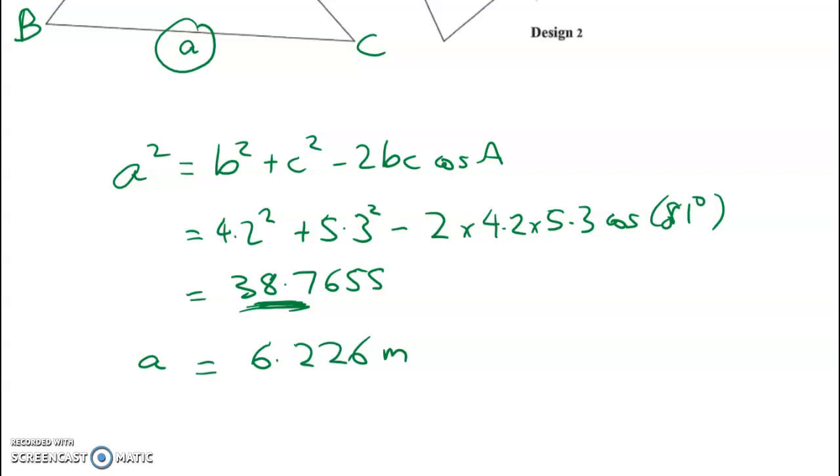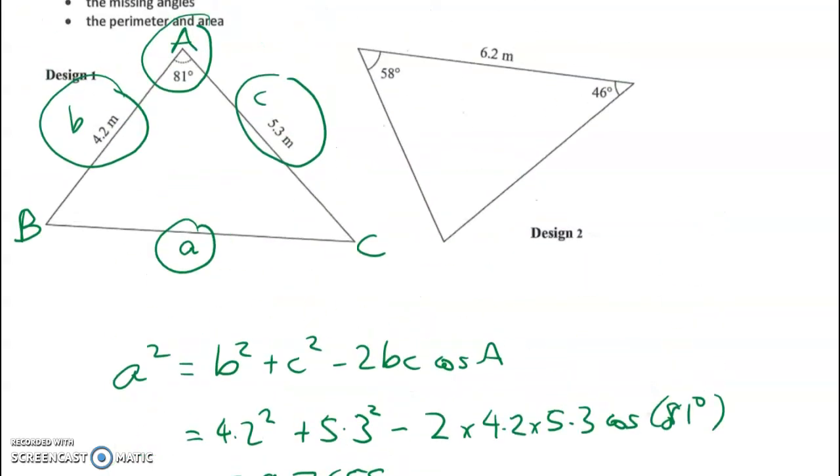So a has a length of 6.226 meters. It would be okay to round that to 6.23. You'll get tiny rounding errors; hopefully they won't be too big, and that's why I'm holding on to a few extra decimal places here. So that's my first one found. Now we need to find the angles.